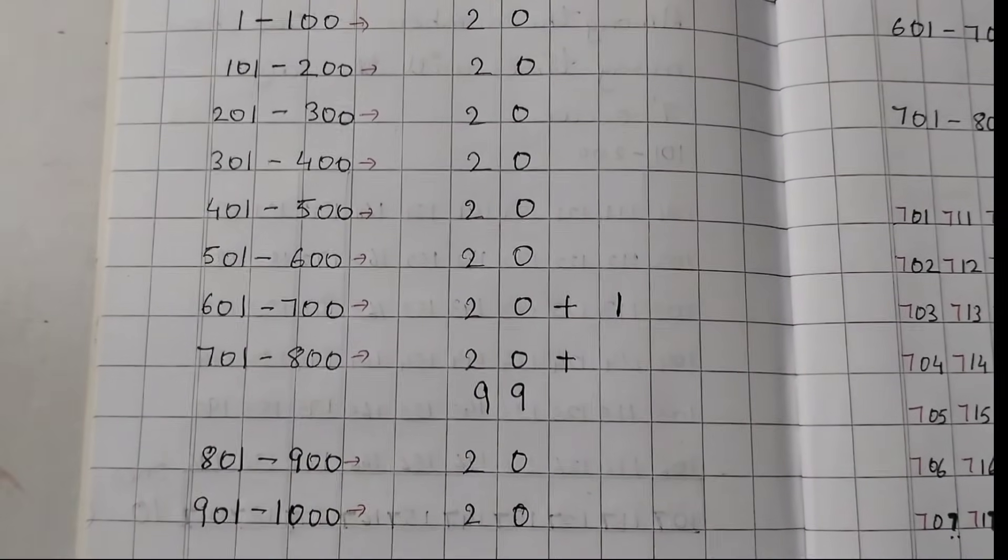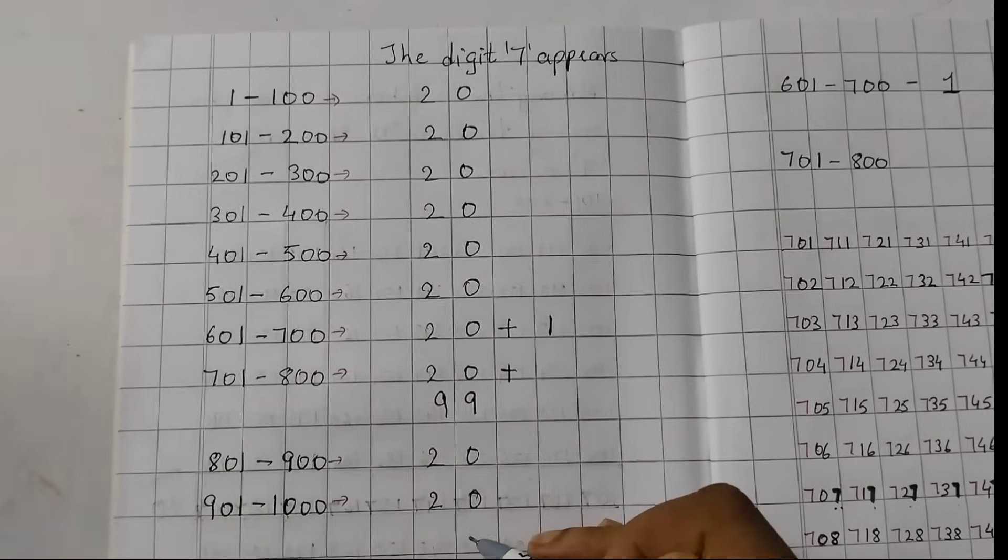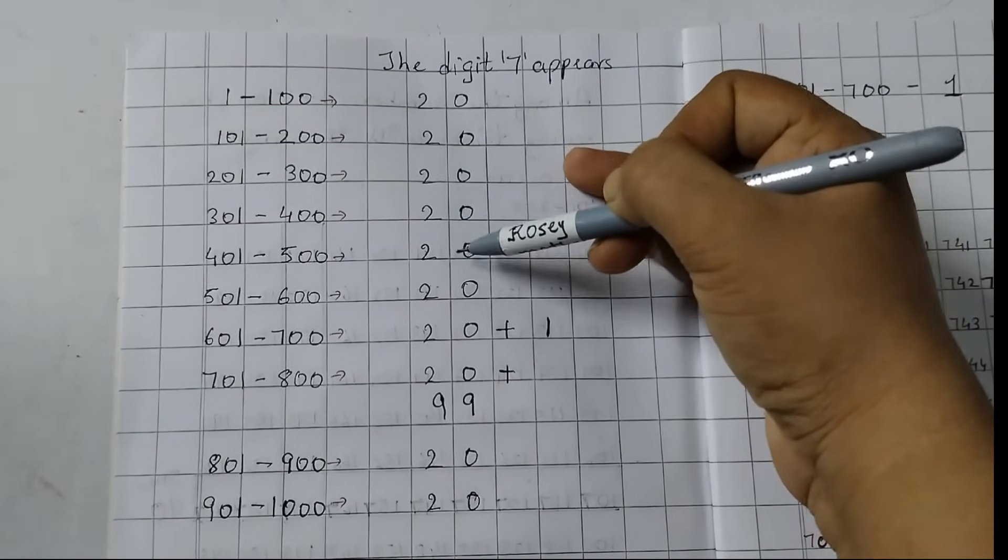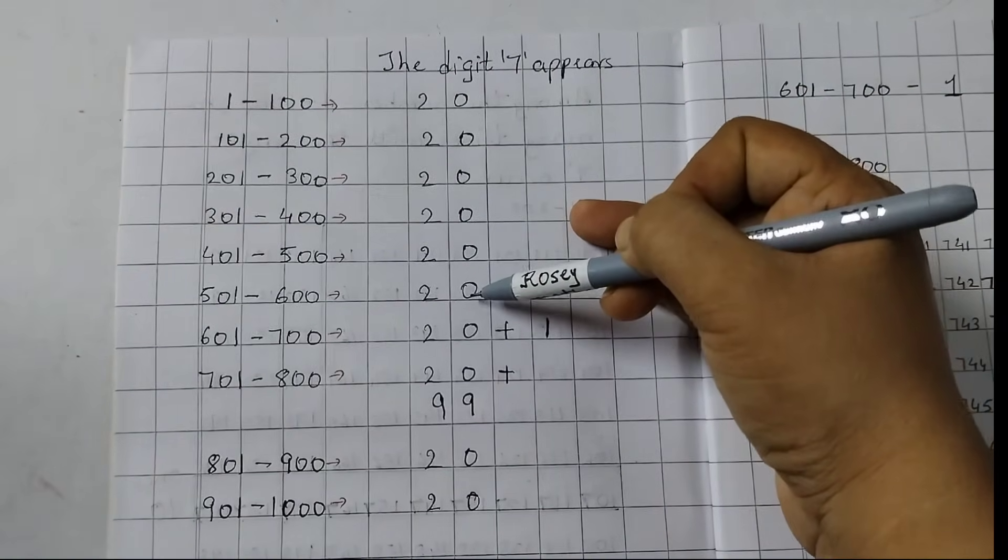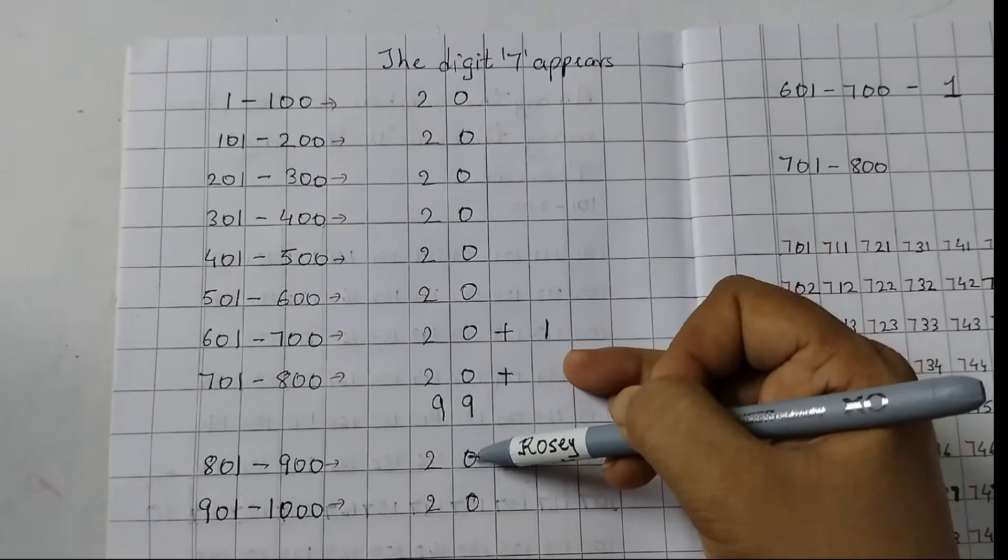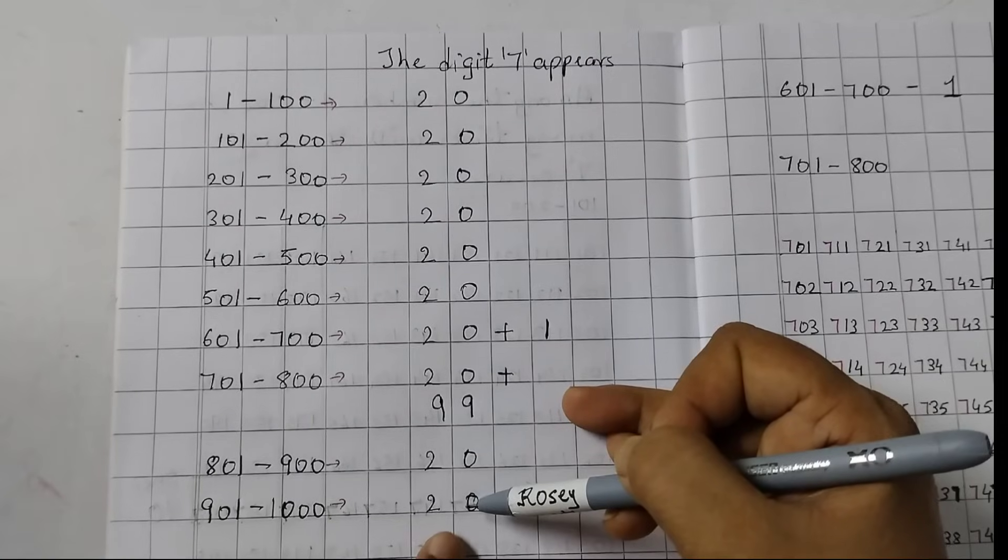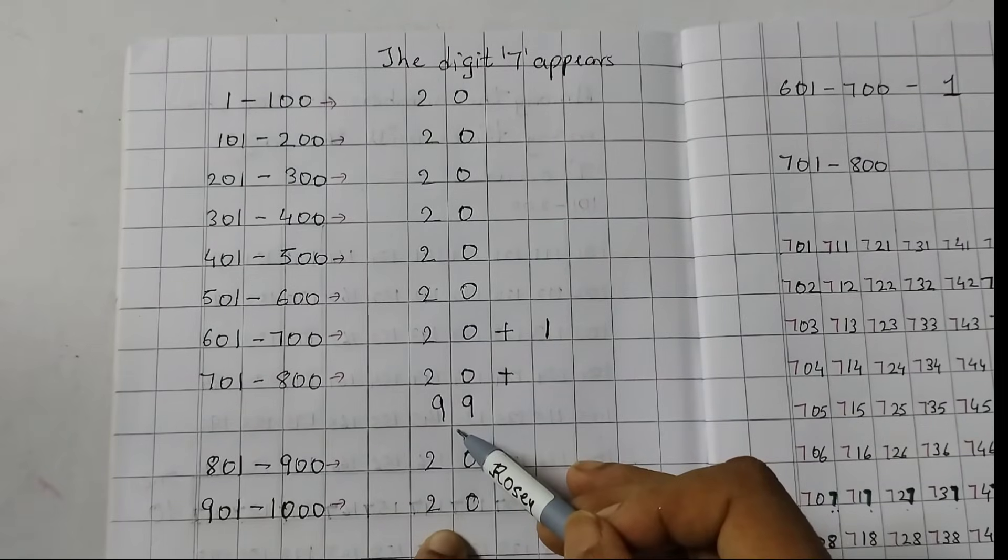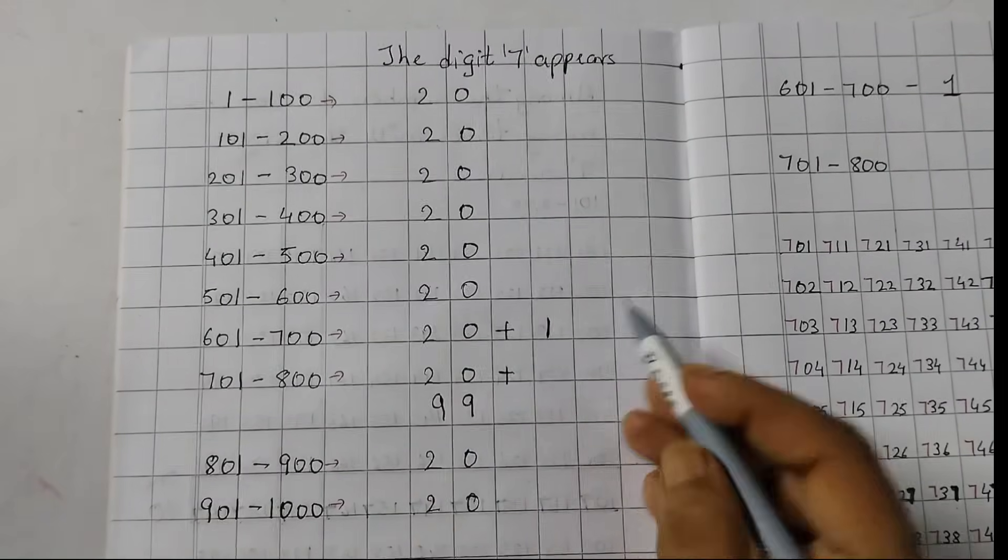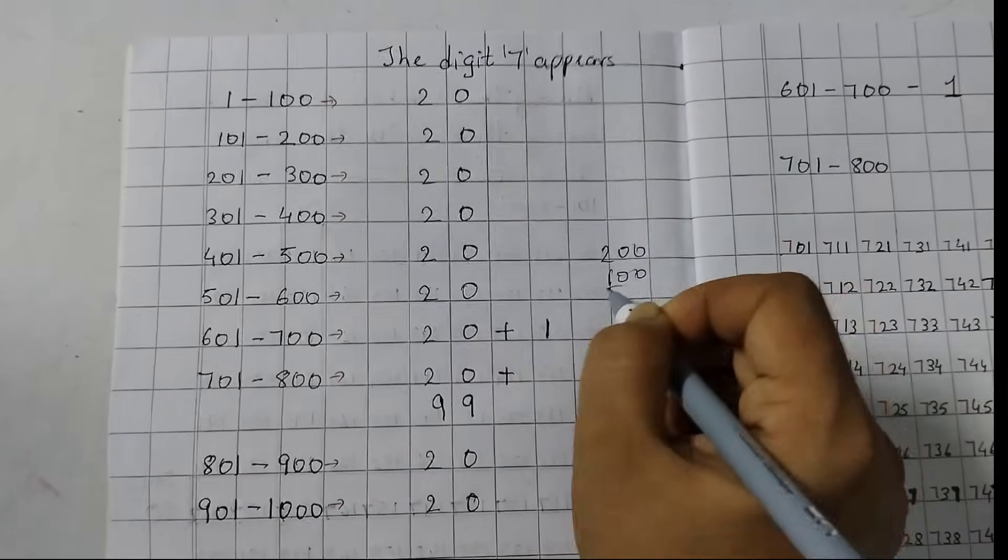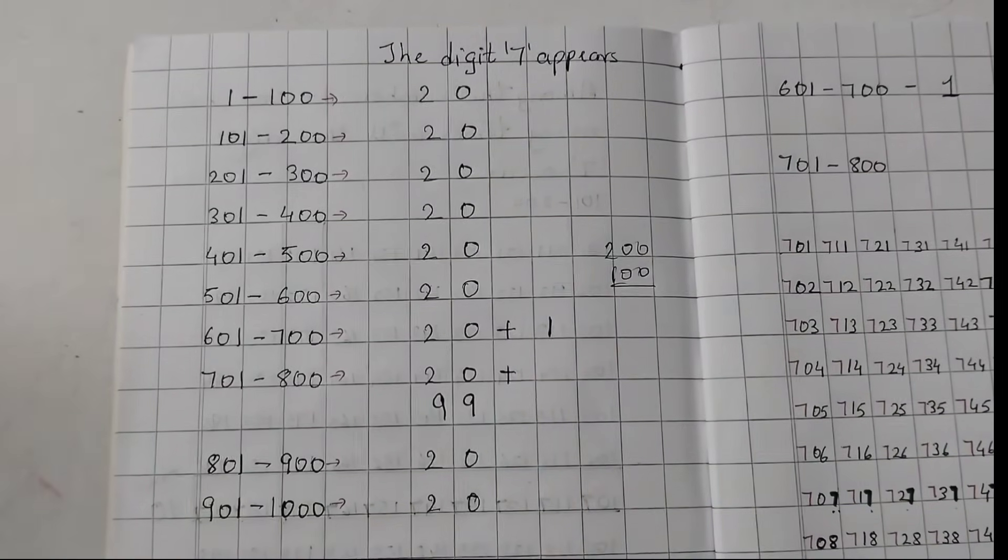Now, we are going to add these numbers. First, we are going to add all the 20s. So, this is 20, 40, 60, 80, 100, 120, 140, 160, 180, 200. I have just counted all the 20s and that's 200. And now, here we have 99 plus 1, that is 100. So, 200 plus 100, and that makes it a total of 300.